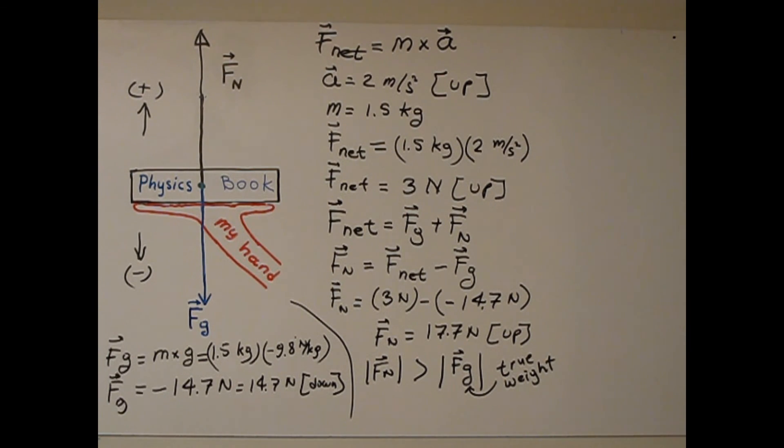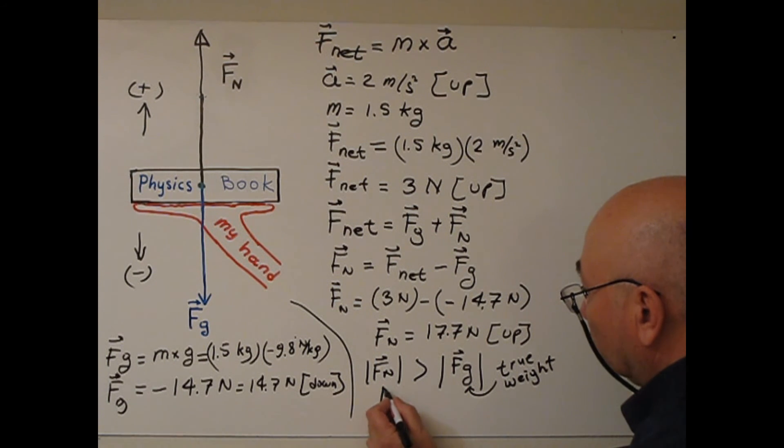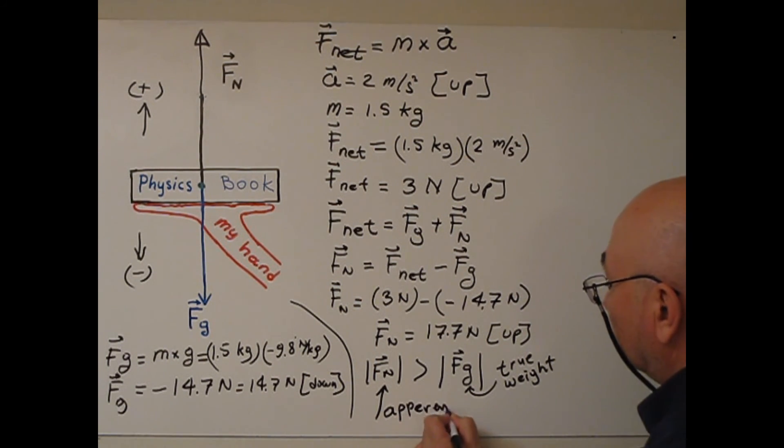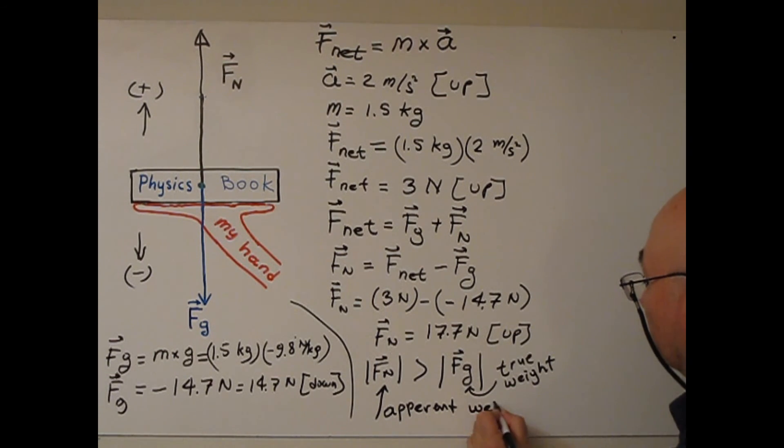But Fn is the apparent weight of the book, apparent weight of the book.